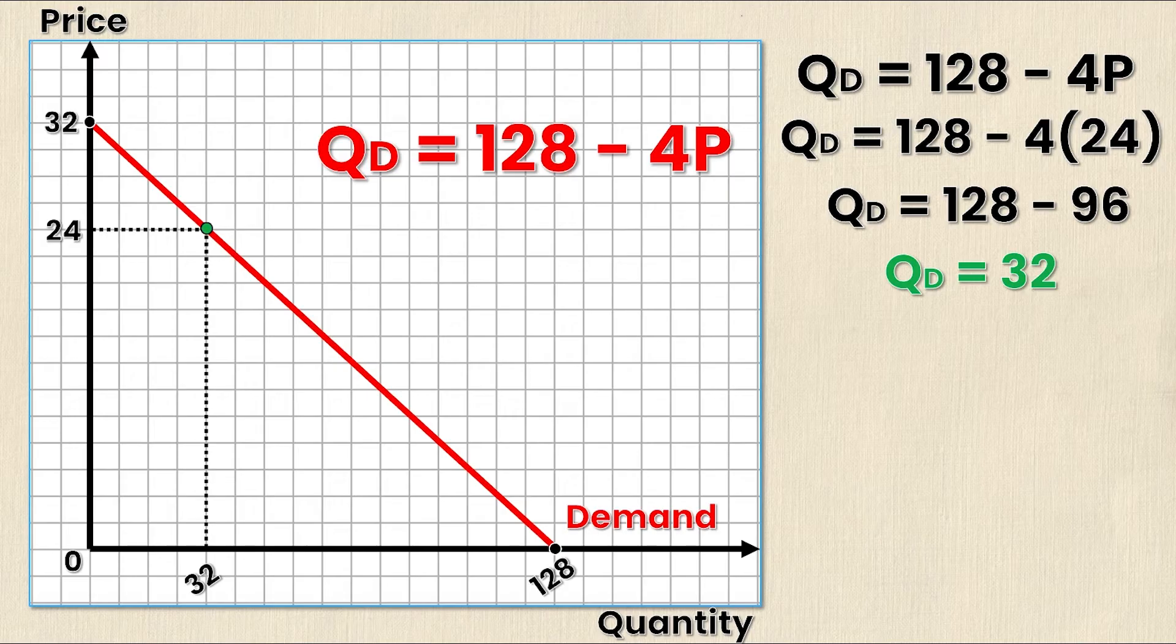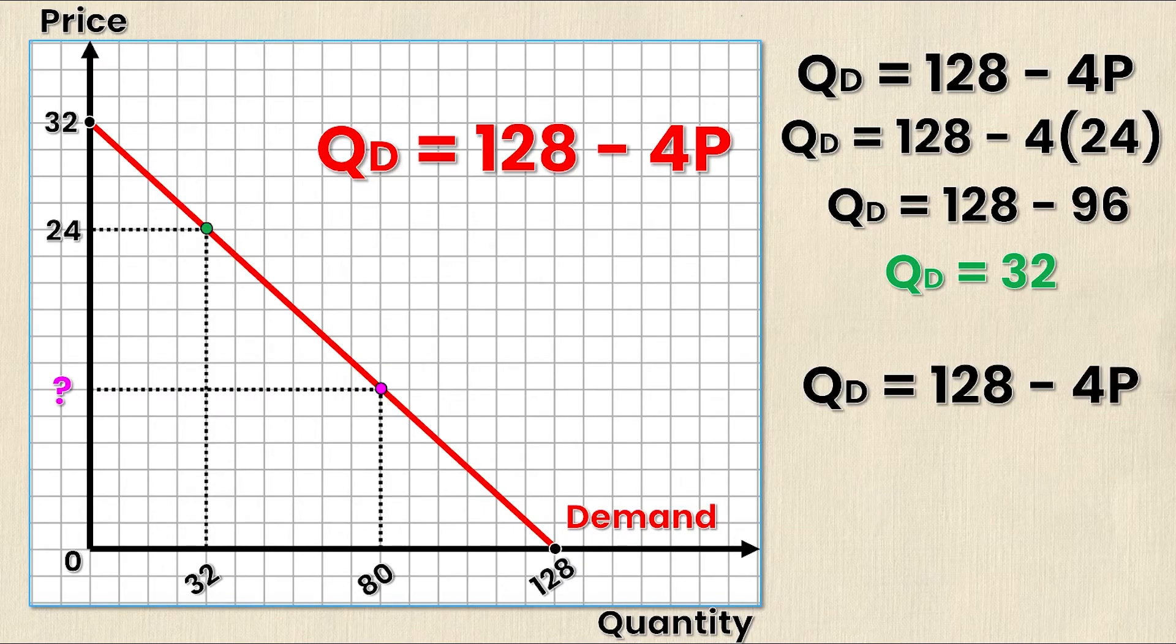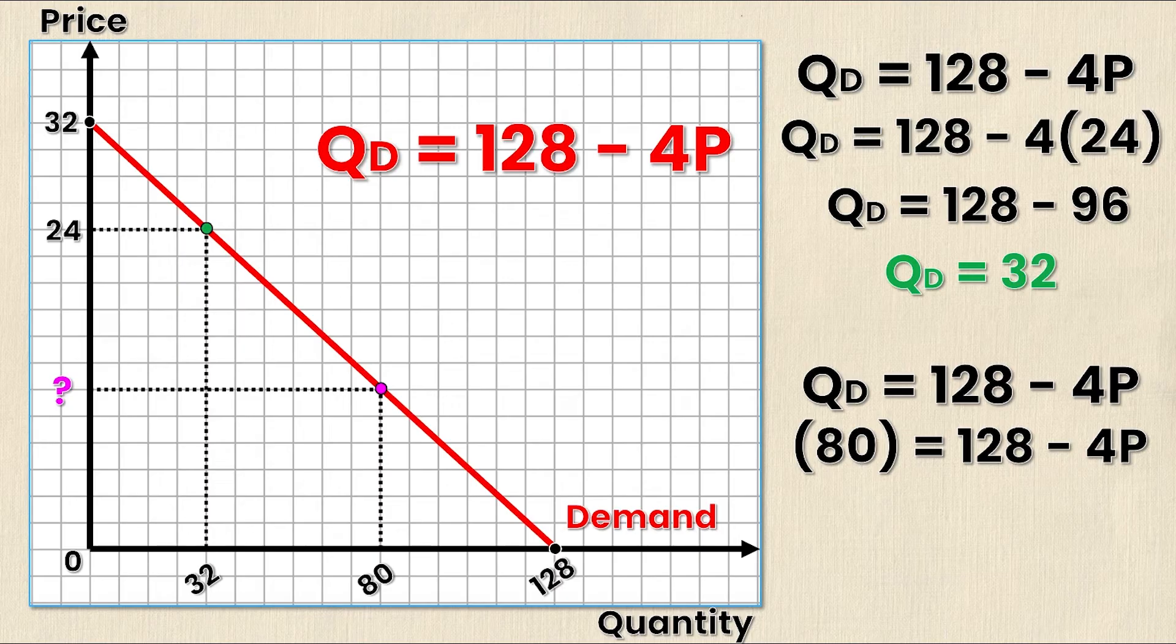I can also do this if I want to choose a Q value and solve for the corresponding P value. Suppose I have a Q value of 80 and I want to see what the corresponding P value is. Well I'm going to rewrite the original equation and now I don't know P but I do know Q, so I'm going to sub in the new value for Q which is 80. Upon doing this I get a line that looks like 80 = 128 - 4P.